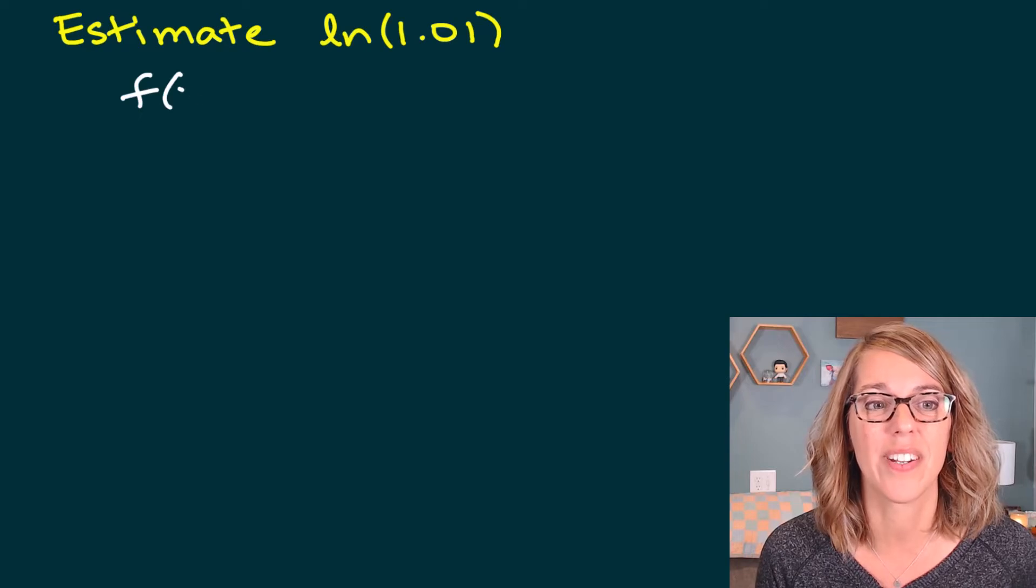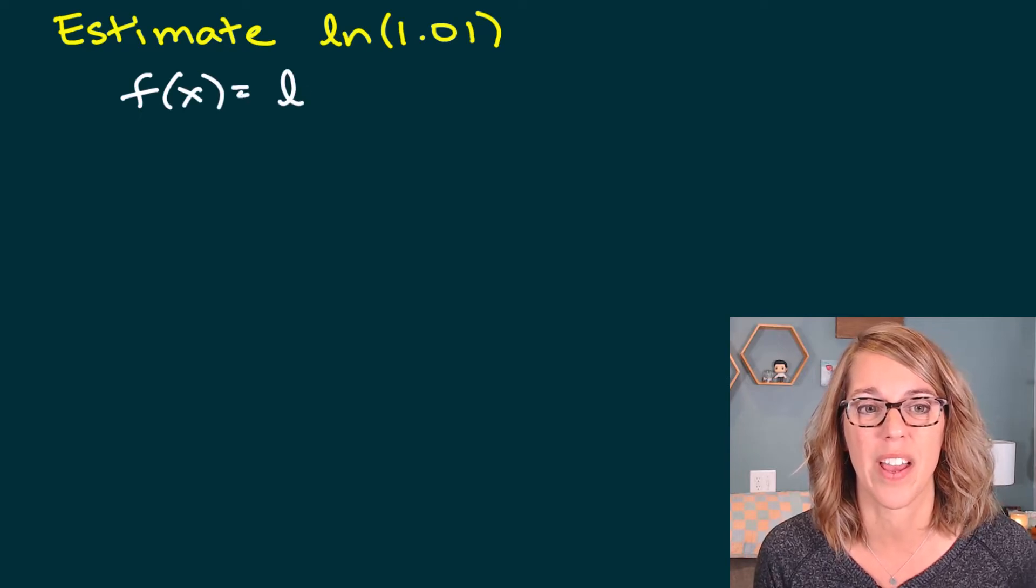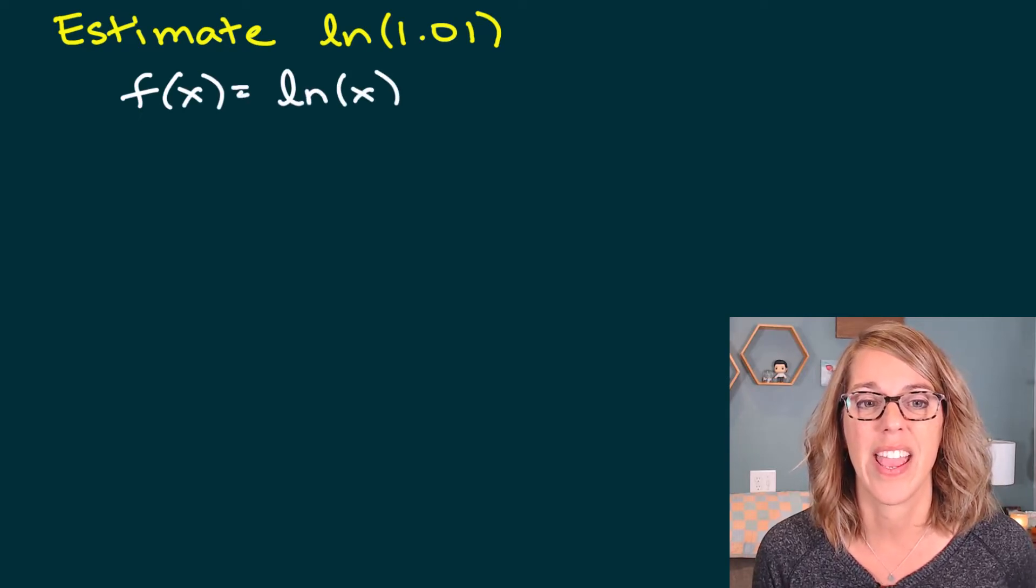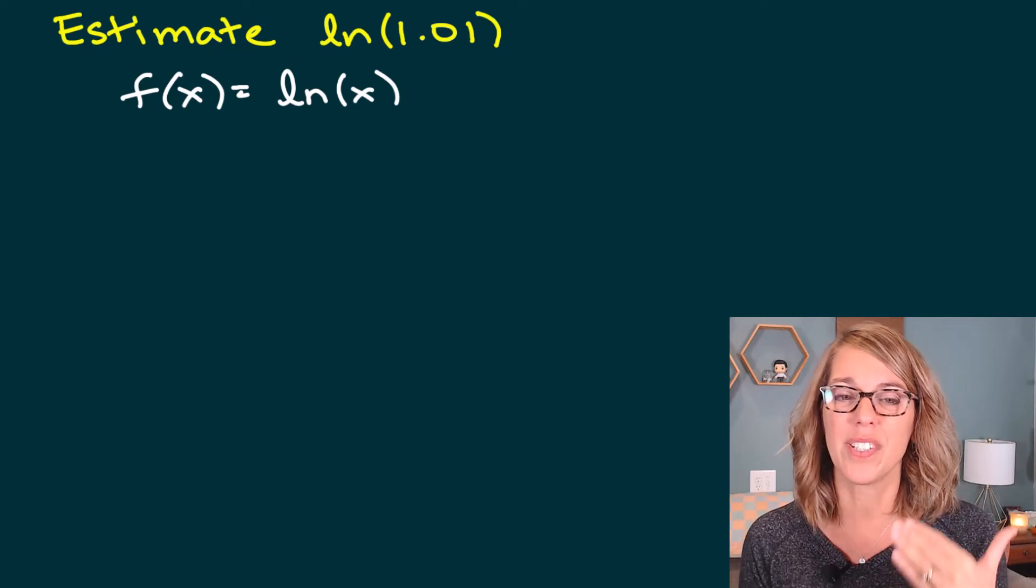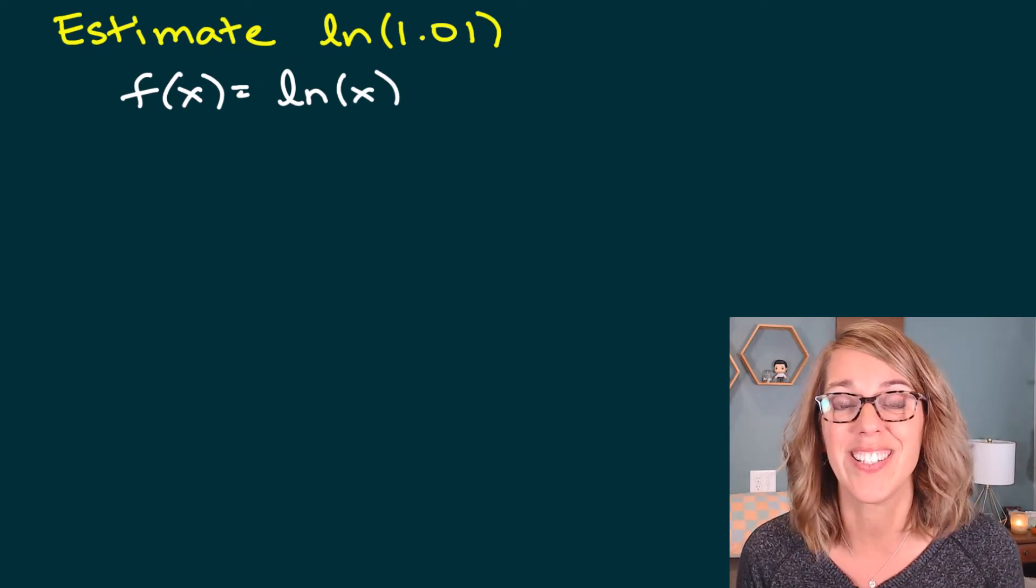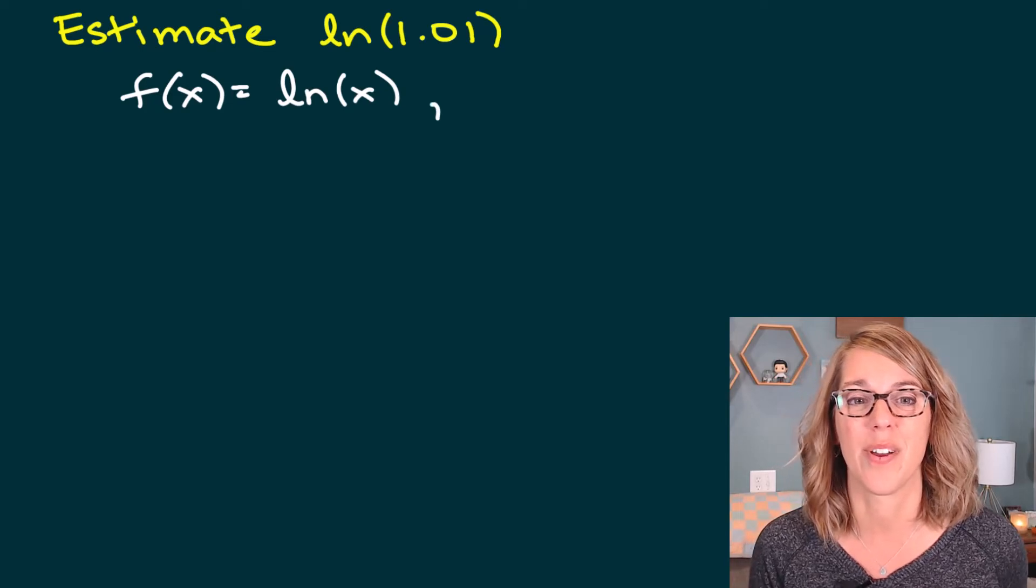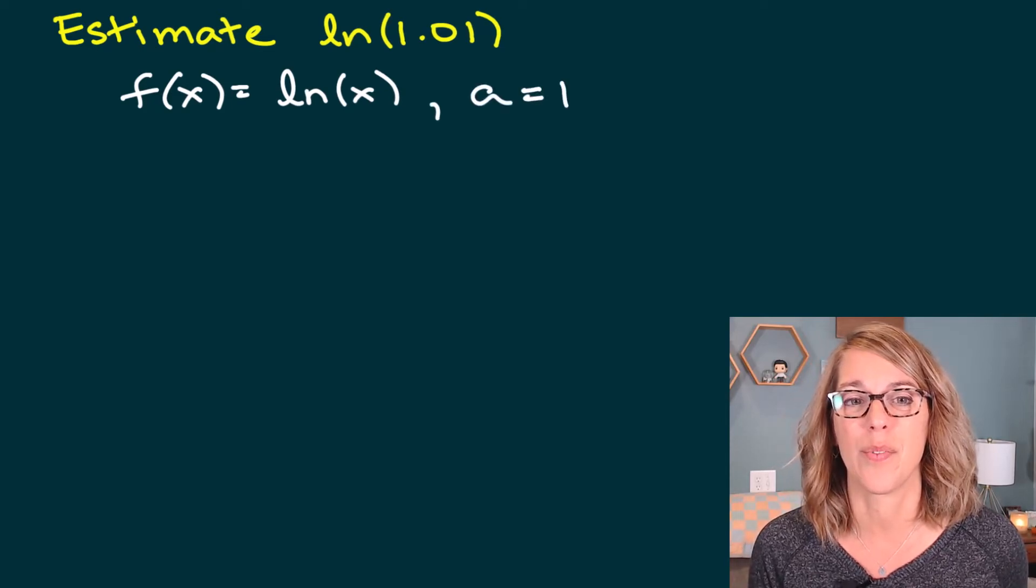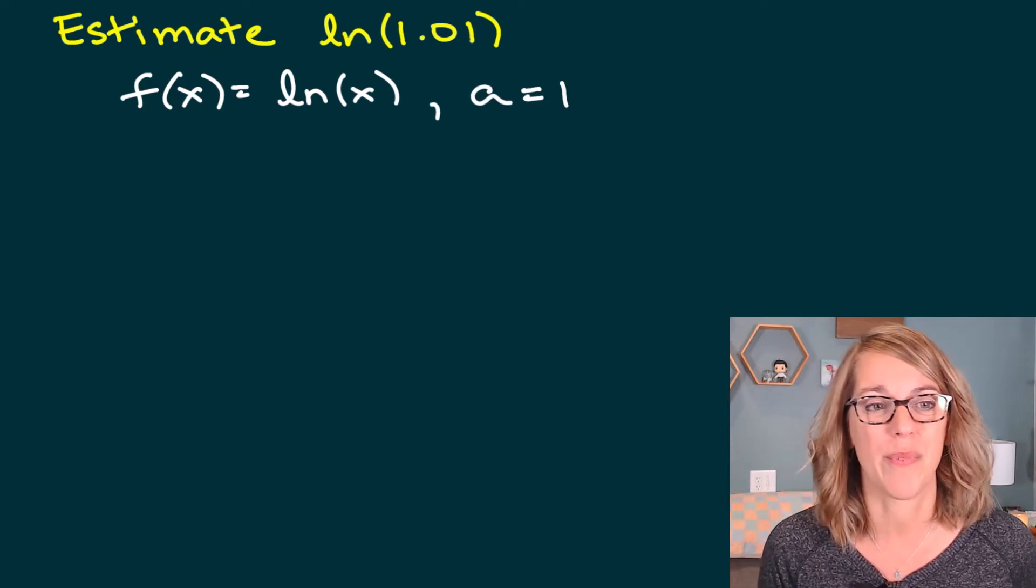So my function is definitely natural log of x, so ln(x). And my nice value is going to be 1 because the natural log of 1 is really easy to compute—it's just equal to zero. So we're going to let a equal 1.